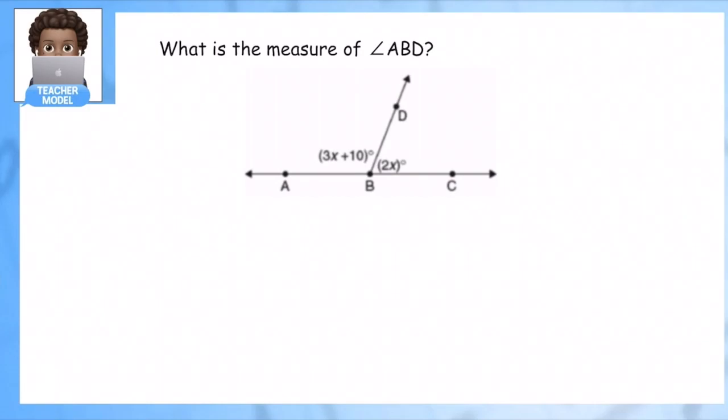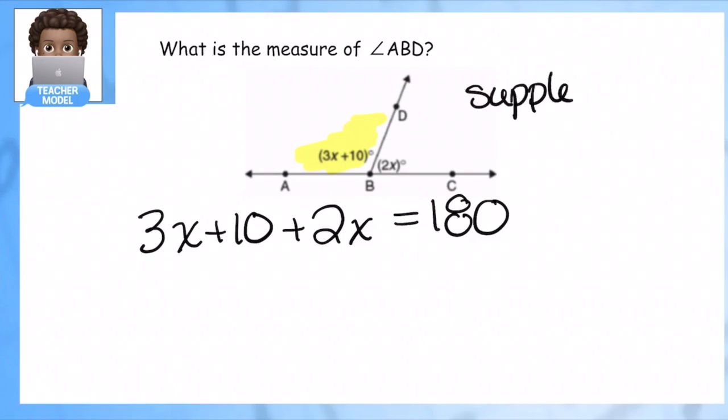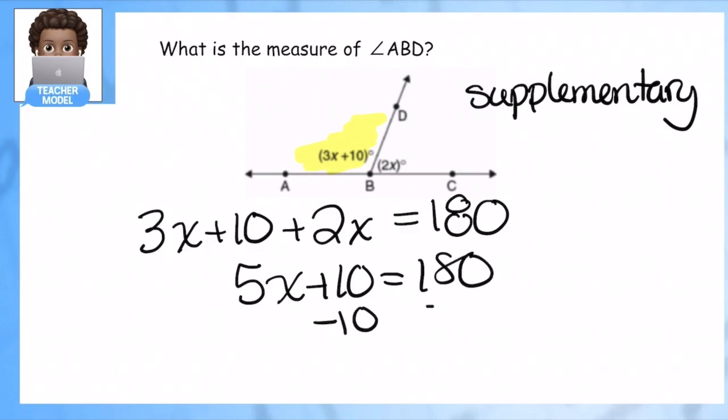In our first problem, we're going to find the measure of angle ABD. We want to find this angle, so what information do we have? I know that these two angles together make 180 degrees, so I'm going to write an equation: 3x plus 10 plus 2x equals 180 degrees, because they are supplements. Now I can combine like terms and solve for x.